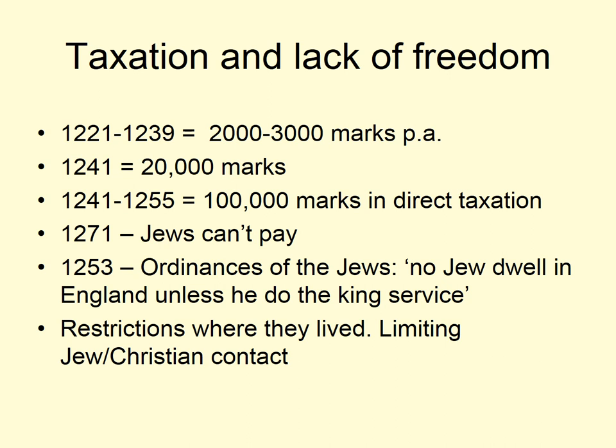A notion developed across the 13th century that Jews actually belonged to the crown. The 1253 Ordinance of the Jews by Henry III stated openly: 'No Jew shall dwell in England unless he do service to the king,' making Jews effectively the equivalent of unfree serfs on a manor, dwelling only to serve the landlord — that same feudal ideology. The taxation collected was remarkable in relation to the value of the king's own crown estates, culminating in 1271 with a tax the Jewish community simply could not pay — driven to bankruptcy by Henry III by the end of his reign.